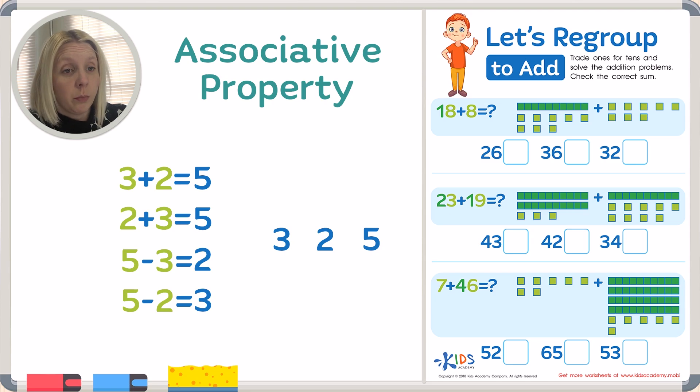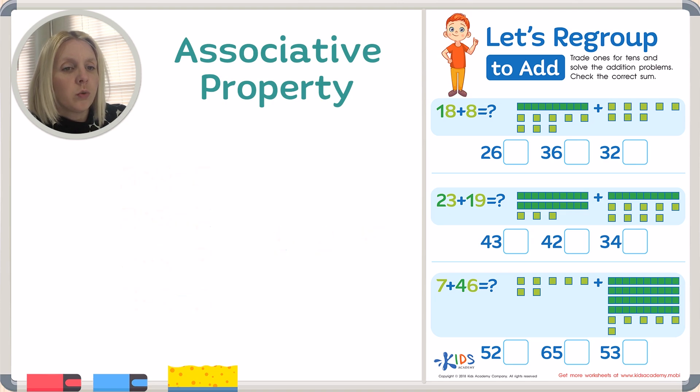Now these are really small numbers. Today we're going to be using bigger numbers like 18, 23, 46, which are more difficult to figure out. The directions say to trade ones for tens and solve the addition problems. We're going to regroup, which basically means taking the same numbers from the associative property but changing the way you're looking at them or grouping them in a different way.